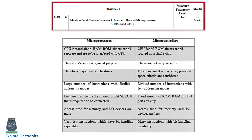A microprocessor requires all additional things and is versatile and general purpose — as per our requirement we can increase the RAM size or memory storage. In a microcontroller, we cannot do that, so it is not versatile. Expensive applications can be installed on a microprocessor but not on a microcontroller because it is restricted, and power, area, and space criteria apply. Microprocessors have a large number of instructions with flexible addressing modes, while microcontrollers have limited instructions and fewer addressing modes. This much is enough to get 5 marks for the microprocessor vs. microcontroller difference.